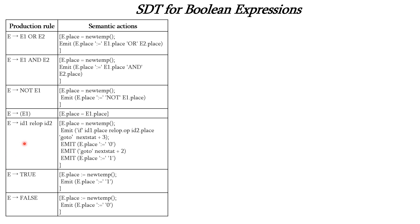For the relational expression ID1 relational-operator ID2, we create a temporary variable in the position of E, then emit the following three-address code. The first statement is: if ID1.place relational-operator ID2.place is true, go to next-statement plus 3. Here, next-statement is the current statement number. Assume the current if-statement has line number 100, so 100 plus 3 goes to line 103.